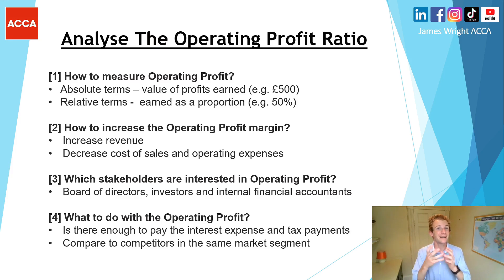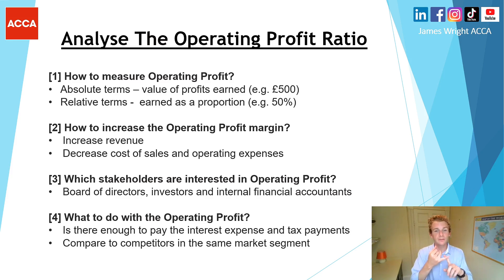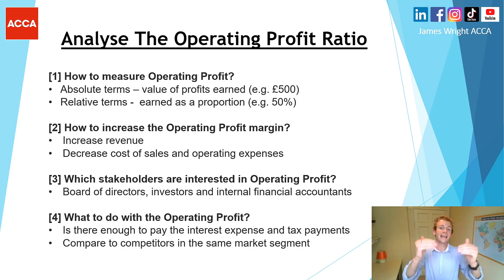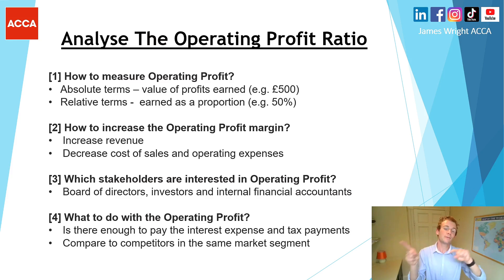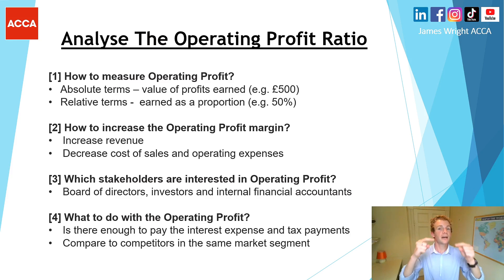We can reduce costs by being more efficient in processes and reducing wastage. You should also link the operating profit to which stakeholders are interested in it. The main ones to highlight are the board of directors — who want high profit margins — investors, because it links into net profit and potential dividends, and financial accountants who record these figures. Then consider what to do with the actual operating profit — specifically whether there's enough to cover interest and tax payments.